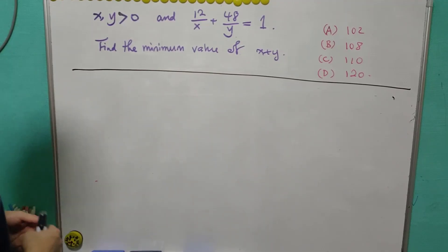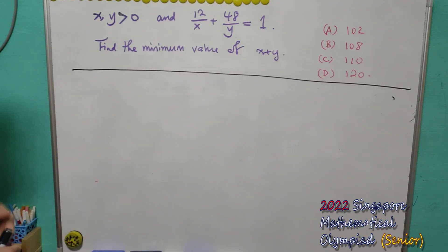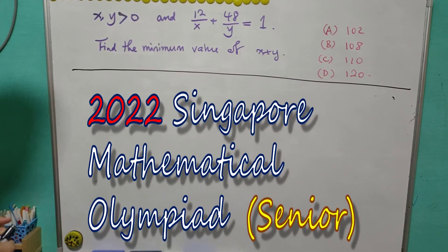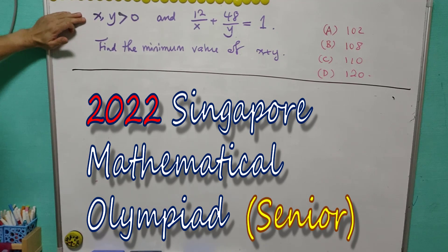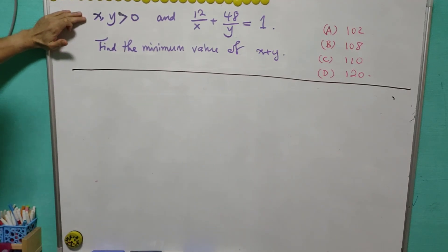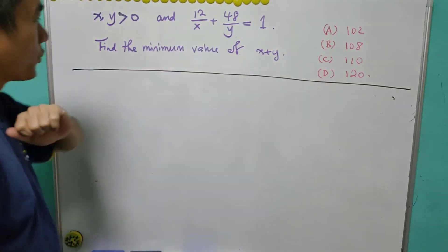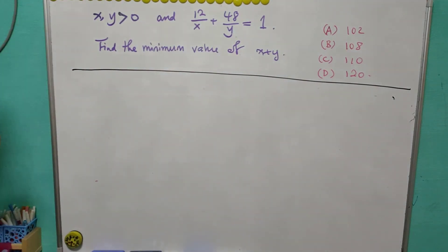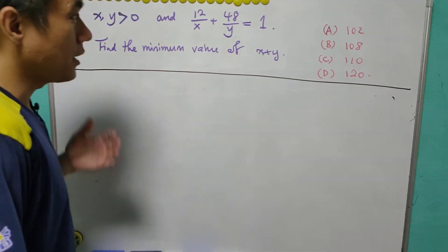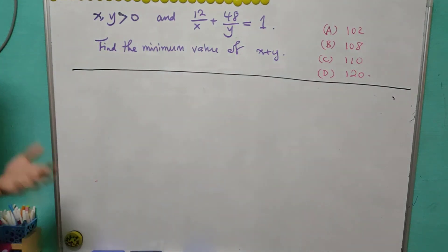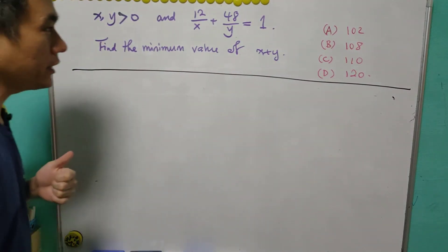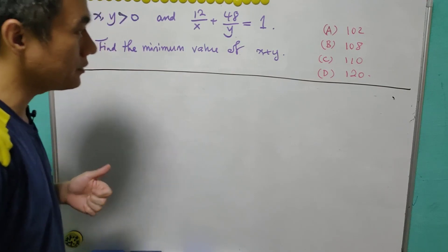The question that we're going to discuss today also appears in SMO 2022 senior section. Given that x, y are positive real numbers such that 12/x + 48/y = 1, we are asked to find the minimum value of x plus y. The options given are: (a) 102, (b) 108, (c) 110, and (d) 120.